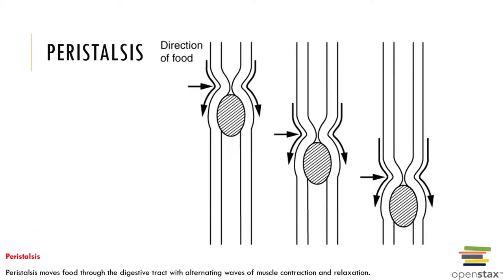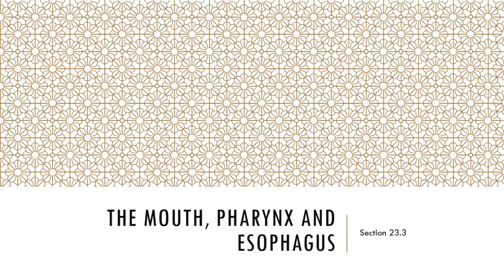In addition to neural control and hormonal control, we also have gravity working to our advantage. Peristalsis refers to the food moving through the digestive tract with alternating waves of smooth muscle contractions and smooth muscle relaxations.